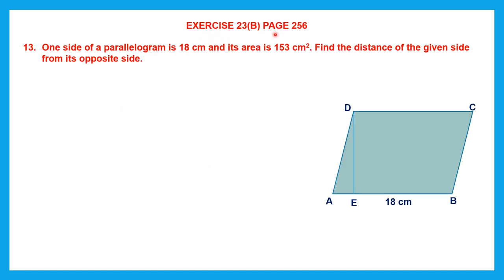Exercise 23b is found on page number 256. We have question 13: one side of a parallelogram is 18 centimeters. Here we have a picture of a parallelogram and one side is 18 centimeters. Its area is 153 centimeters square. Find the distance of the given side from its opposite side — that distance is DE, which is also the height.